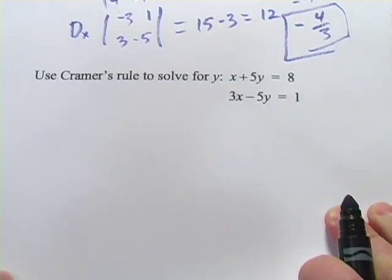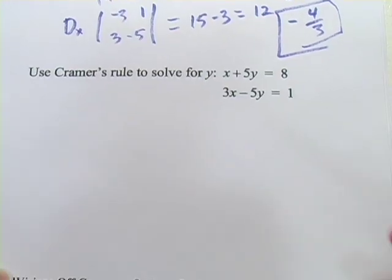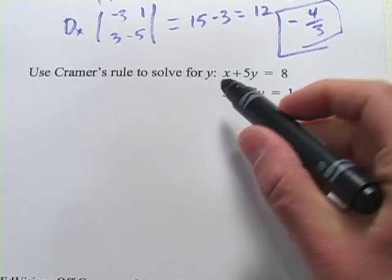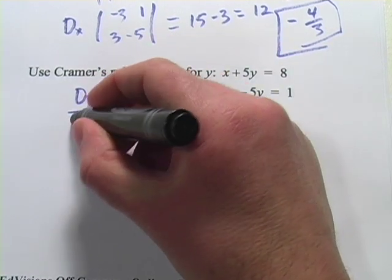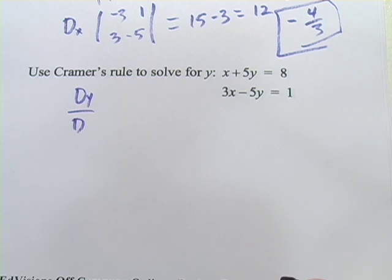Let's look at one more. So here we have another system, and it says use Cramer's rule to solve for y. So what we're going to be looking for is big D_y over big D. So let's try big D first.